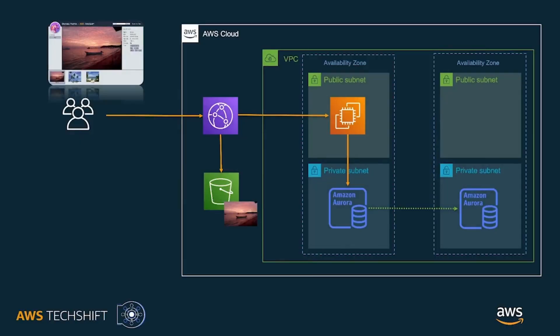Up until now, the dynamic content has been served by a single EC2 instance connected to the database. To scale the web server and increase resilience, we need to add more instances.